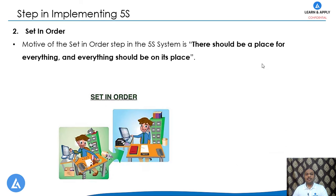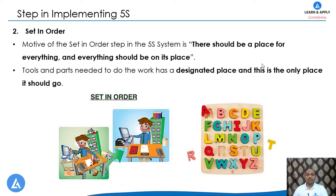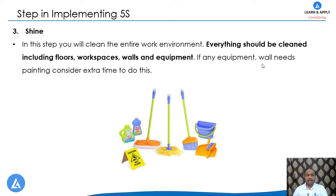The next step is Set in Order. In this step, we ensure there is a place for everything and everything is in its place. All the tools, materials, or parts needed for the work have a designated place, and that is the only place they should go. The next step is Shine. In this step, we clean the entire work environment — including floors, workplaces, walls, and equipment. If any equipment or wall requires painting, extra time should be allocated for that activity.